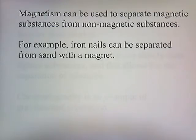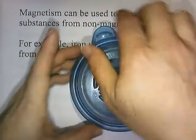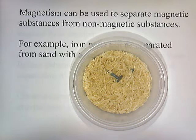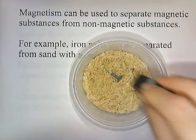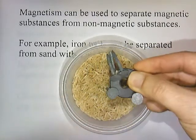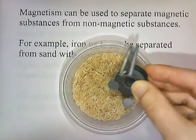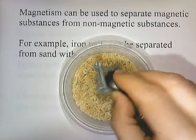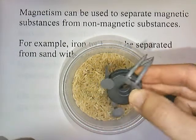Magnetism can be used to separate magnetic substances from non-magnetic ones. For example, iron nails can be separated from sand with a magnet. Here I've hidden some nails in rice — I move the magnet around and pull out the iron nails, because the iron nails have magnetic properties but rice does not.